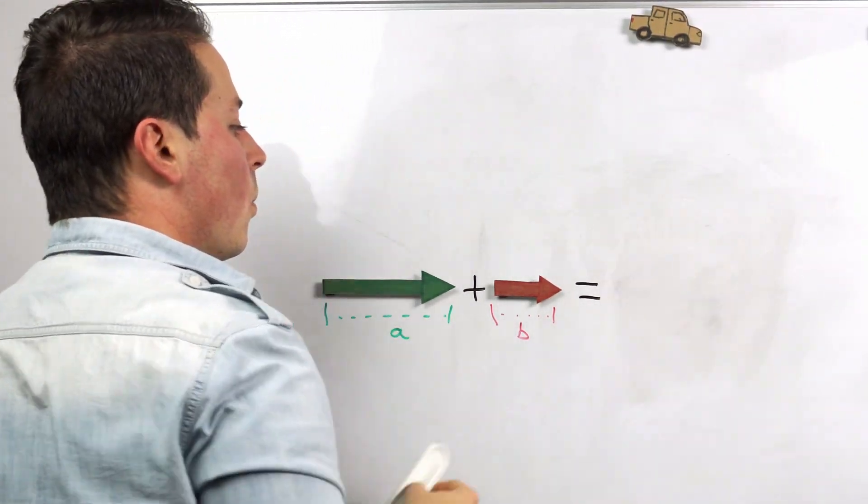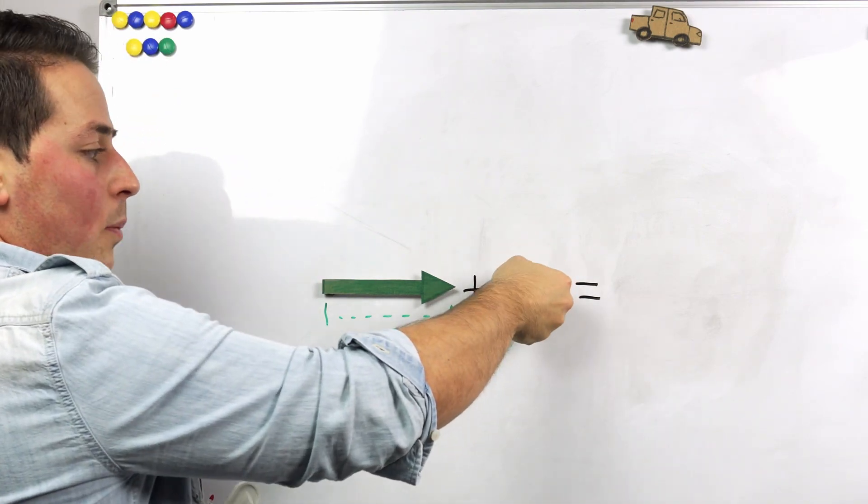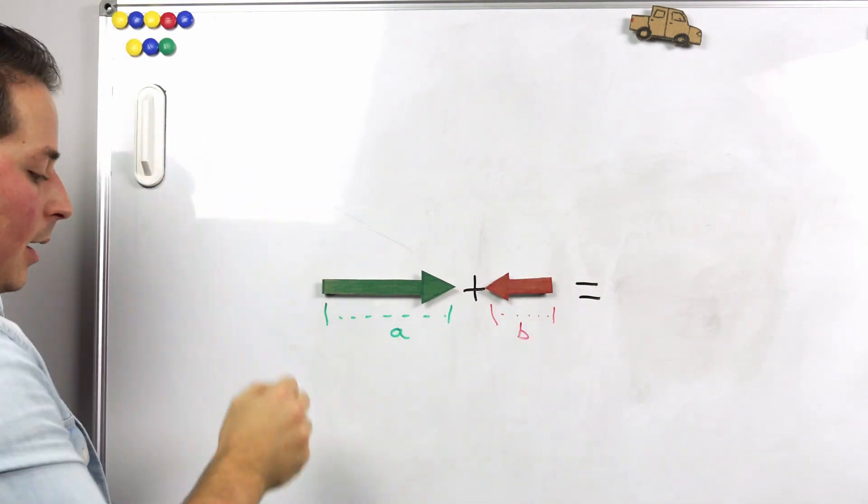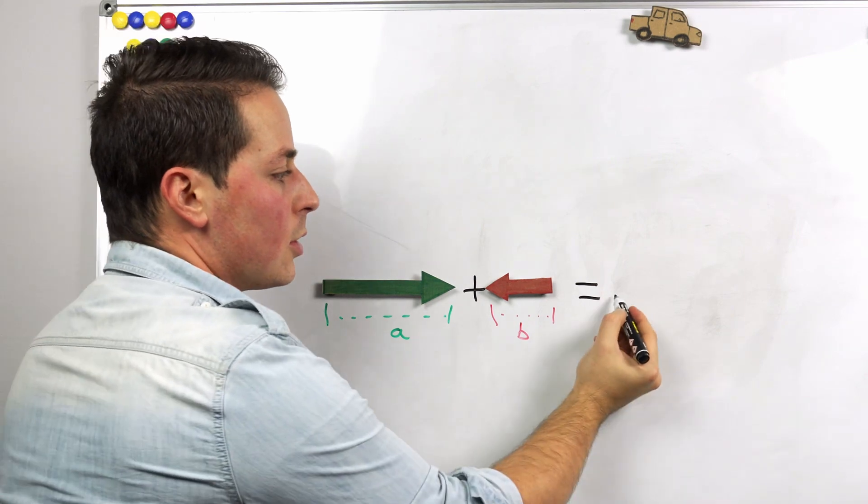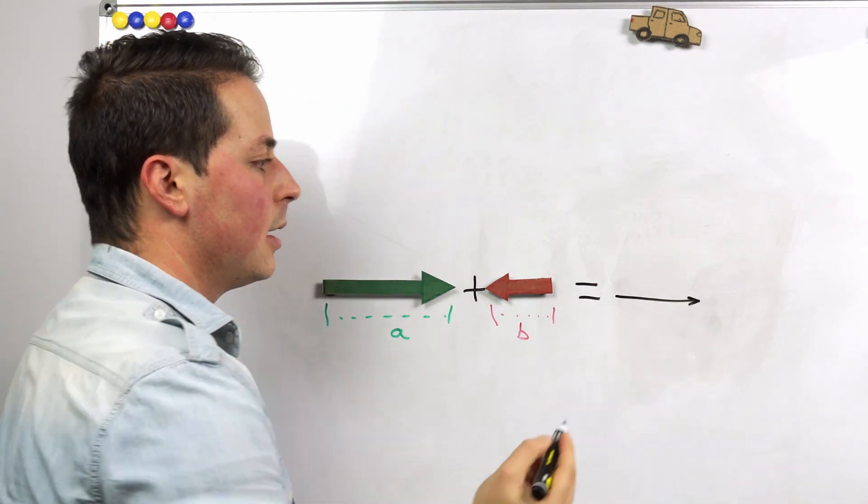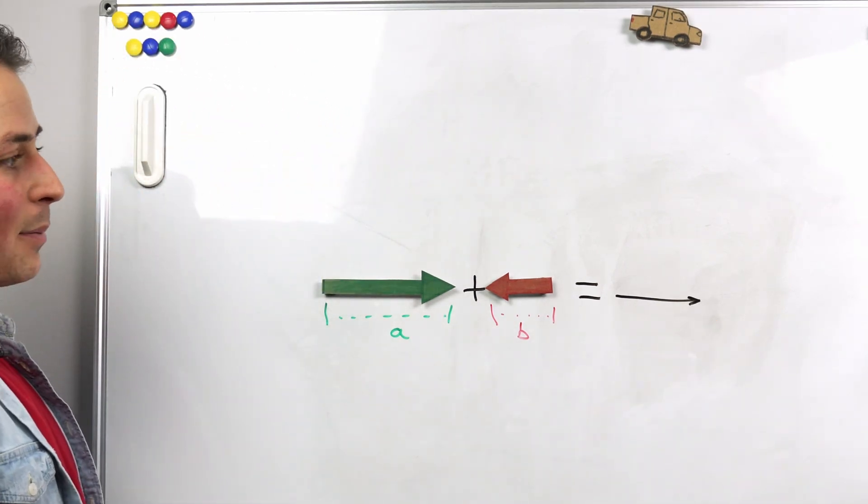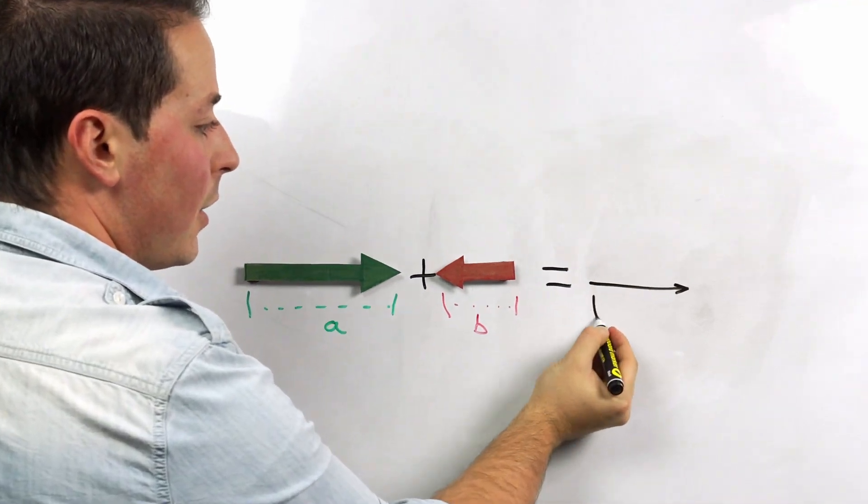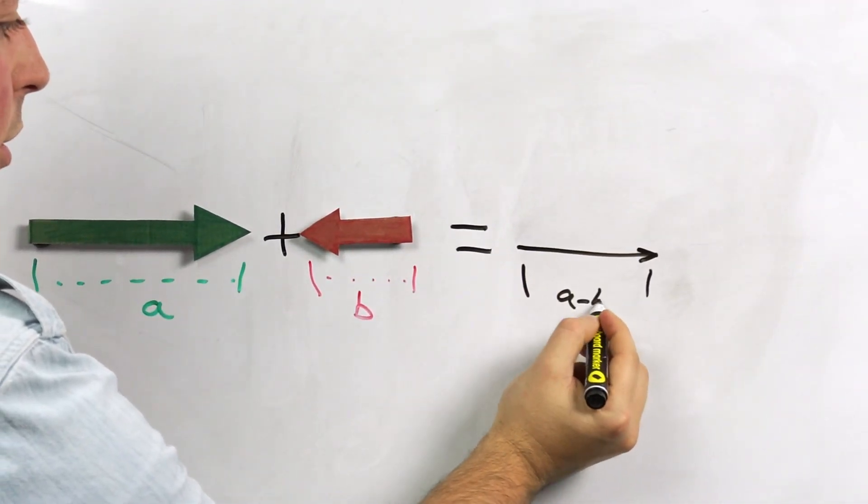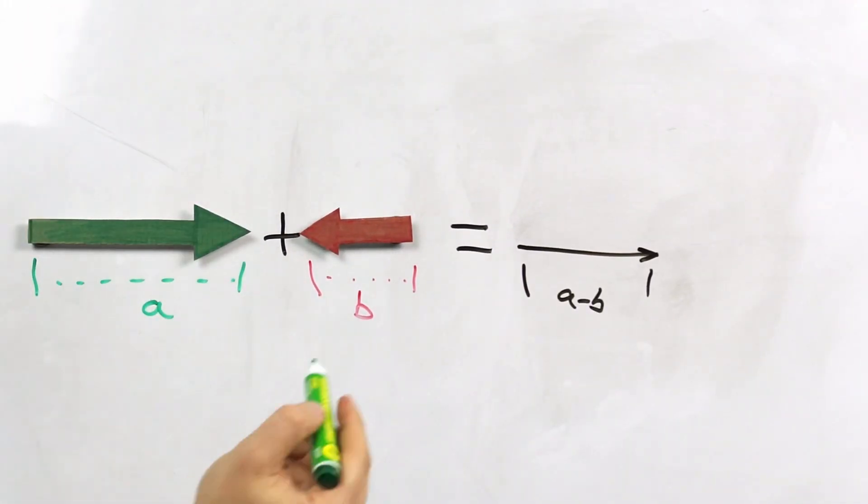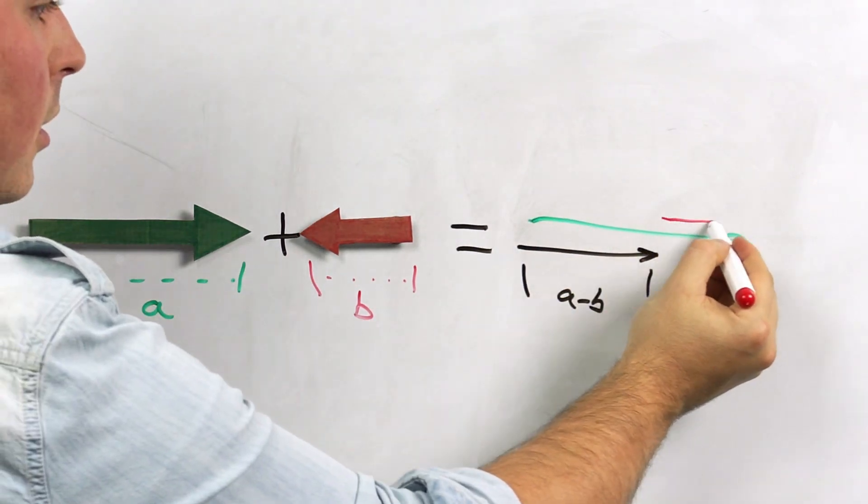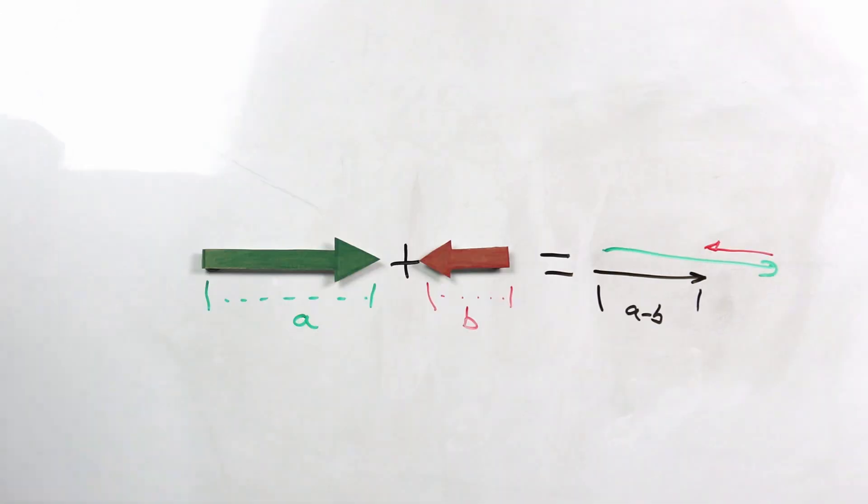However, if the vectors point in opposite directions, now the result also lies on the same line, but its magnitude will now be the difference between magnitudes. That's because each vector counteracts the other and the result is a normal difference, as if they were just numbers.